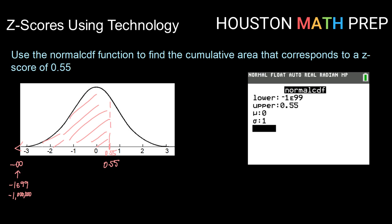And then our upper bound is 0.55. Because we're working with a z-score, we know we're on the standard normal distribution, so we'll leave our mu at 0 and our sigma at 1. If we were to type this in and hit enter, we would get 0.7088.